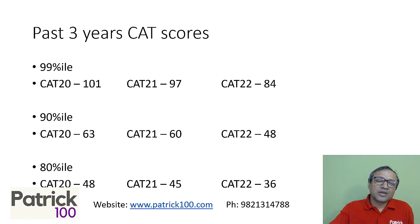Let's look at the stats that have been there recently. If you look at the past three years, in CAT 20, it required 101 marks to get a 99 percentile. CAT 21, it was 97 and CAT 22, it was 84 marks.